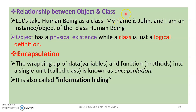Relationship between object and class: we need to write a class for a human being. One instance can be an object — an instance can be created in this class. In this class, we can construct a human being. So, what is the object? Physical existence. Class is a logical definition. We consider the object's properties and behavior, and we call the object in the class.